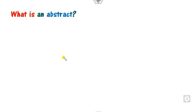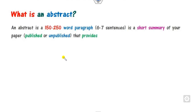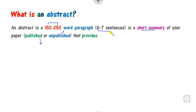What is an abstract? Firstly, an abstract is a very short or brief summary of your paper, whether it is published or unpublished. It is mostly 150 to 250 words, or you can say a maximum of 6 to 7 sentences.